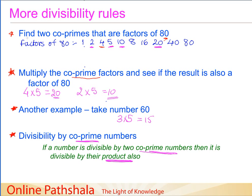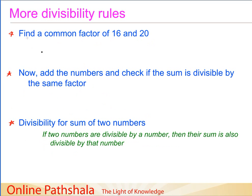Let us now discuss another rule. We find a common factor of 16 and 20 — the one that comes to mind is 4, which is a common factor of both. Now we add these two numbers: 16 plus 20 gives us 36. We check whether the sum is divisible by the same factor. Is 36 divisible by 4? Yes, it is. We can also take the factor 2, which is also a factor of both 16 and 20, and 36 is divisible by 2 as well.